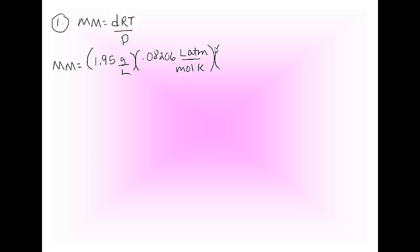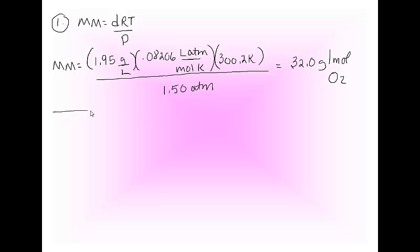Times temperature in Kelvin, divided by pressure, which was given in the right units because there's an R. If you do the math, you get 32.0 grams per mole, which is of course oxygen gas, 16 and 16. There's method number one.